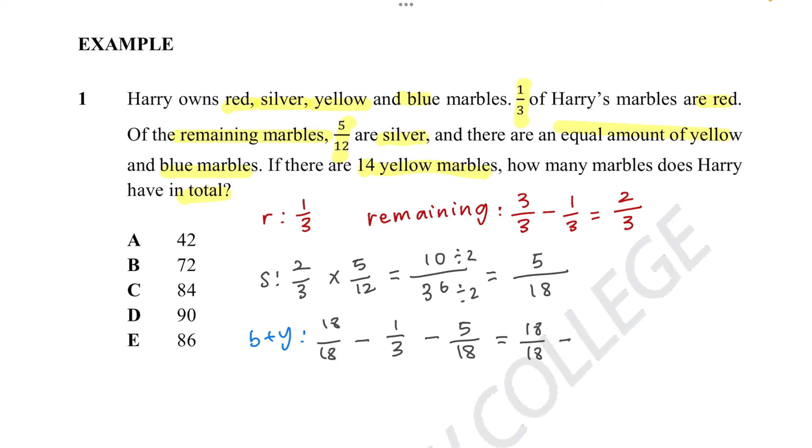Minus, we could probably times by 6 on the bottom, which will be 18 again, and then we'll add 6 on top, minus 5 out of 18. Once again, numerator stays the same. 18 minus 6, we can say is 12, and 12 minus 5 would be 7. So blue and yellow marbles would be 7 out of 18.